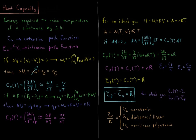Dividing everything by N, the constant pressure molar heat capacity of an ideal gas as a function of temperature equals the constant volume molar heat capacity Cv-bar plus the gas constant R. So the difference between Cp-bar and Cv-bar for an ideal gas equals R.